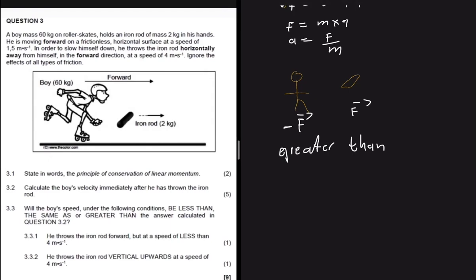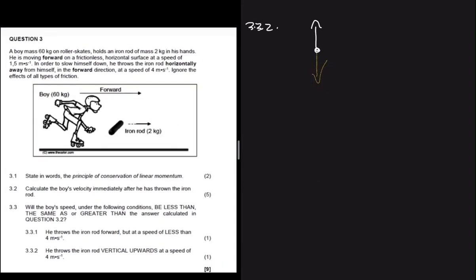For 3.3.2, the boy throws the iron rod vertically upwards at 4 m/s. The rod then applies a reaction force on the boy downwards. Because this force is downward, it has no effect on his forward velocity. Instead, since he has now lost the mass of the iron rod, he can move forward faster than before. His velocity after will therefore be greater than the answer calculated in 3.2.